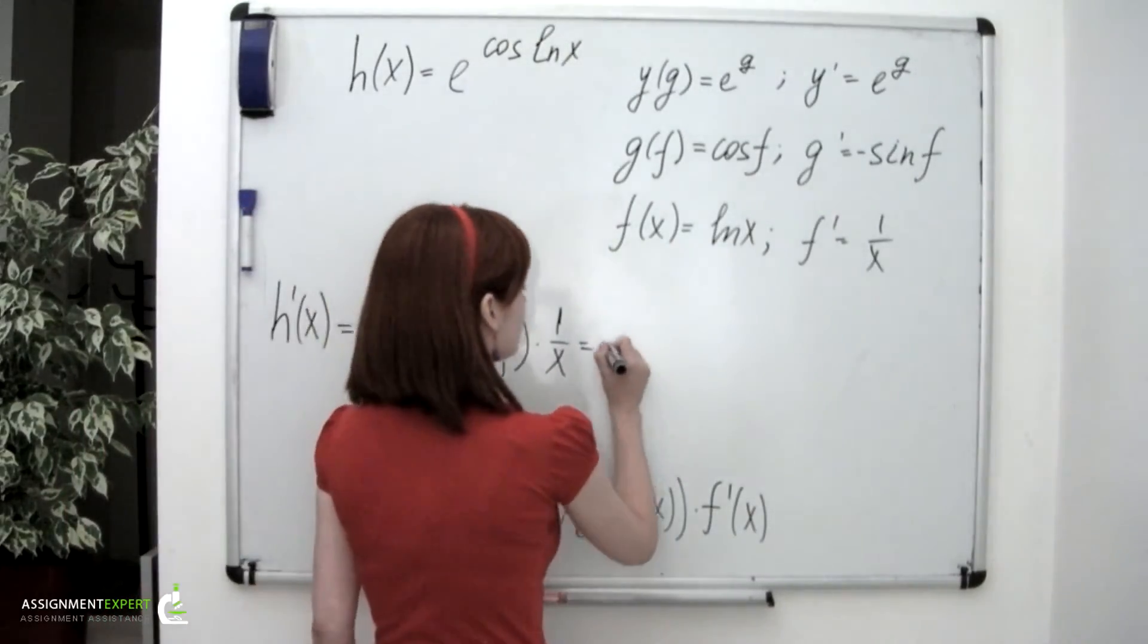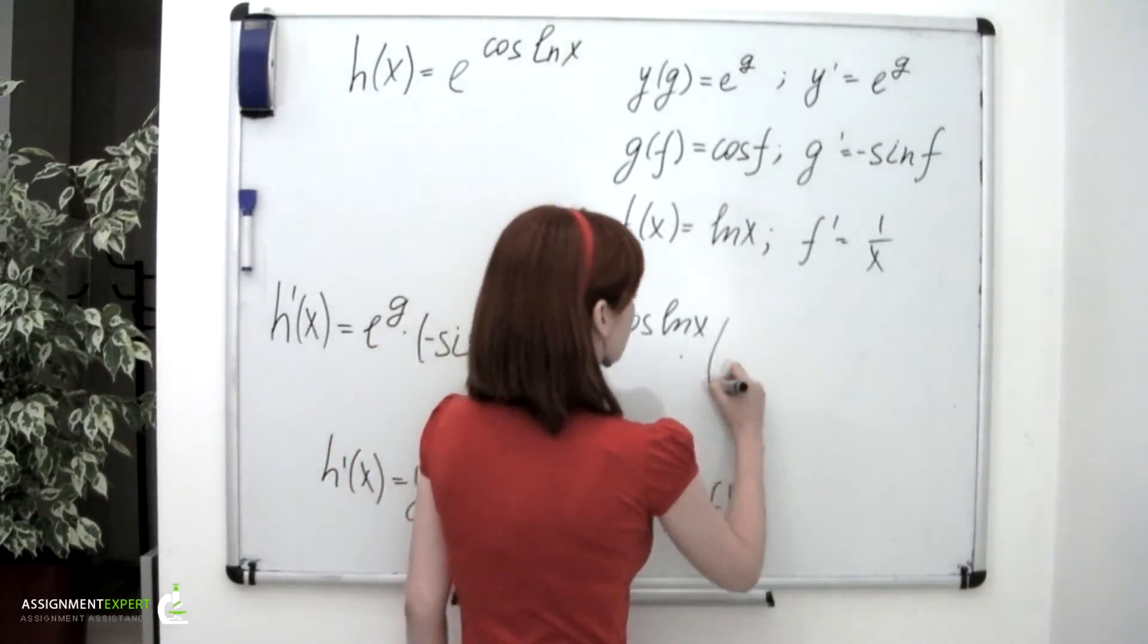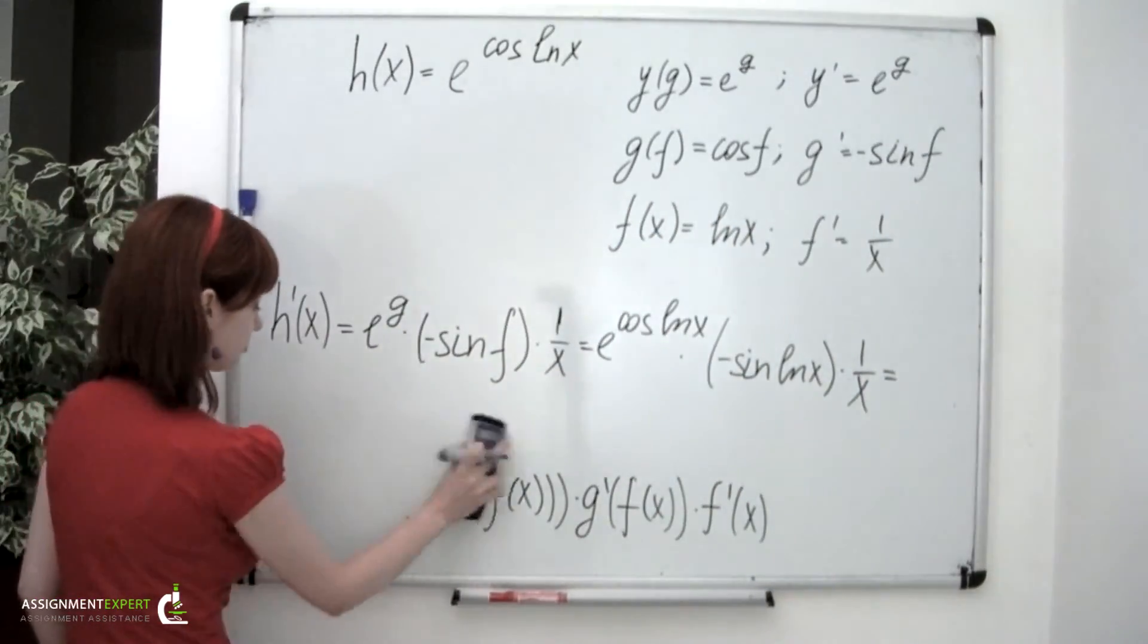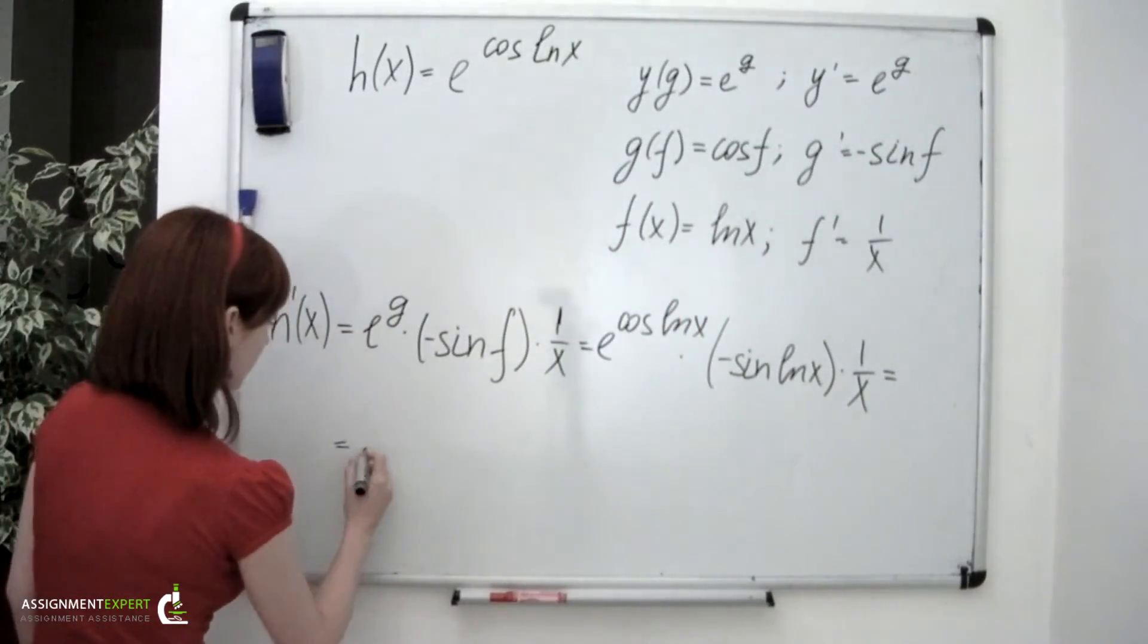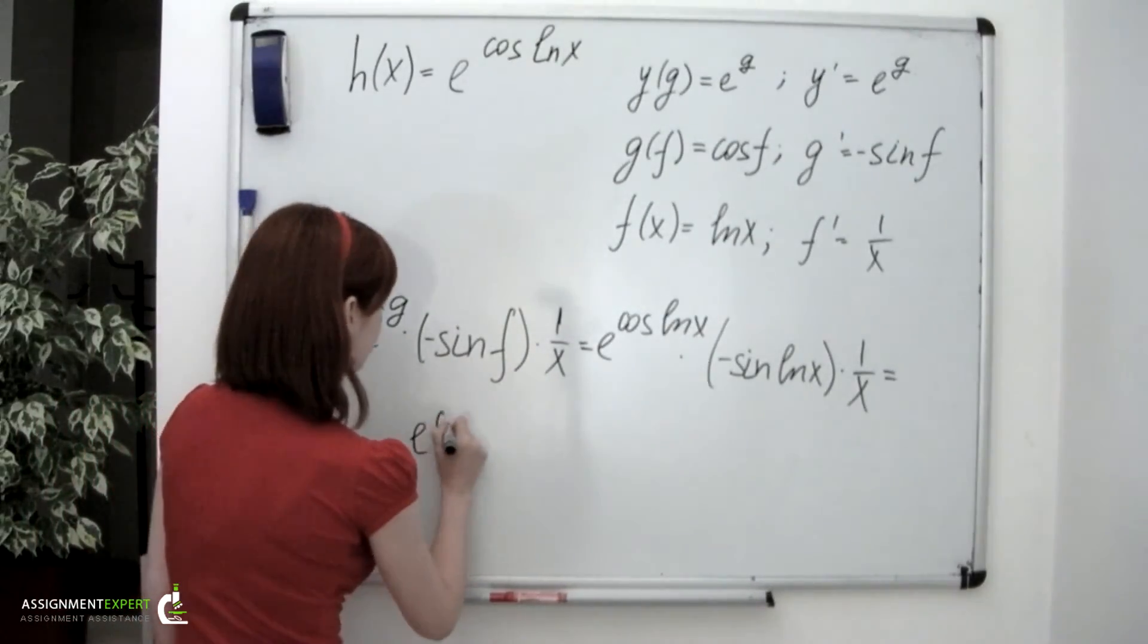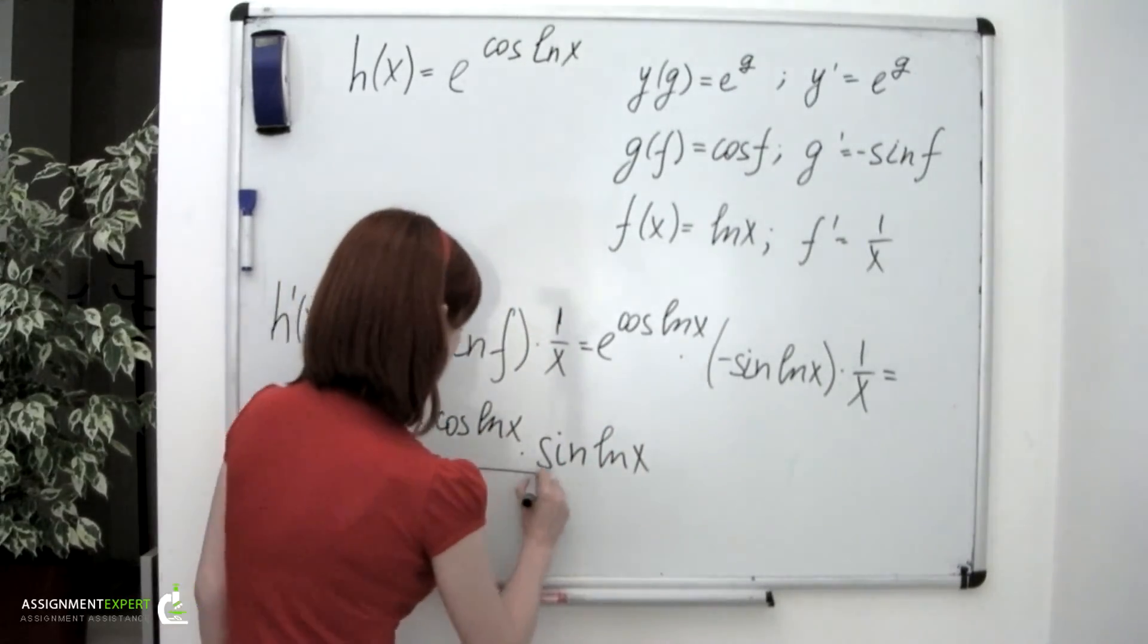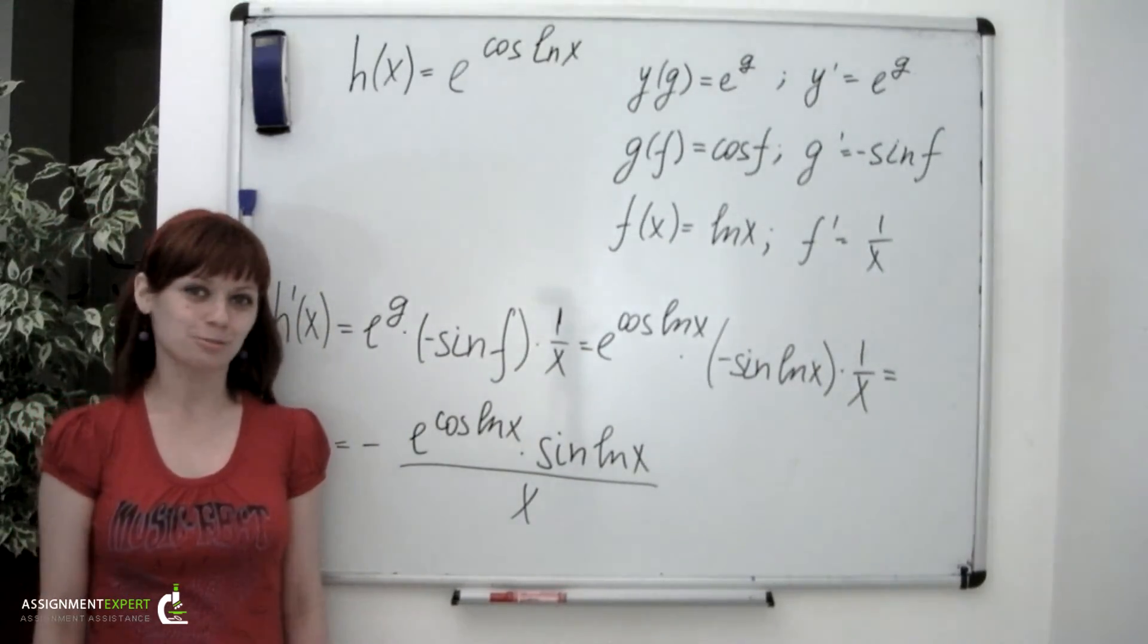So what we have is e taken to the power of cos of ln of x times negative sine of ln of x over x. And that will be our answer. And you can find more examples on this playlist, so enjoy!